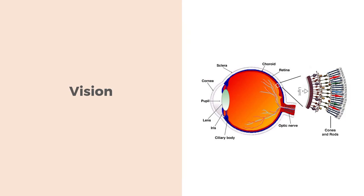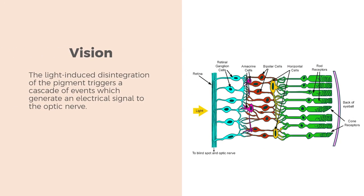Receptor cells in the retina of the eye contain a light-sensitive pigment called rhodopsin, which is a complex of protein opsin and the vitamin A metabolite retinal. The light-induced disintegration of the pigment triggers a cascade of events which generate an electrical signal to the optic nerve. Rhodopsin can only be regenerated from opsin and vitamin A. Rod cells with this pigment can detect very small amounts of light, making them important for night vision.